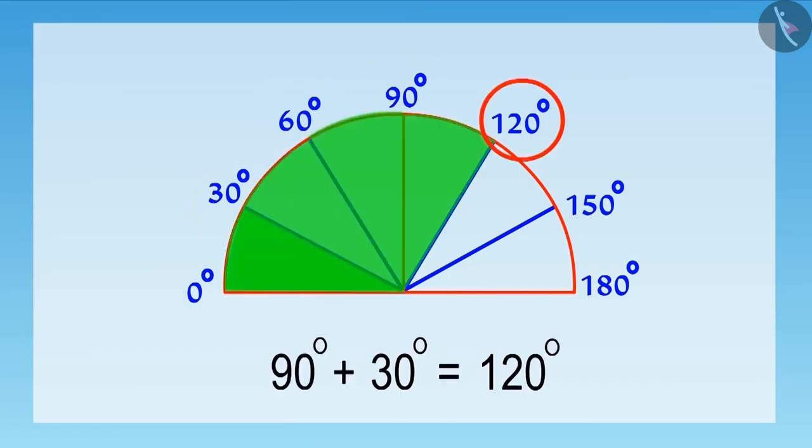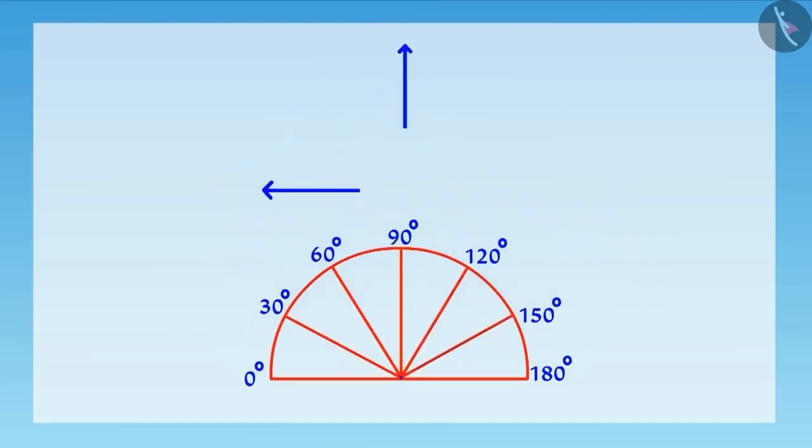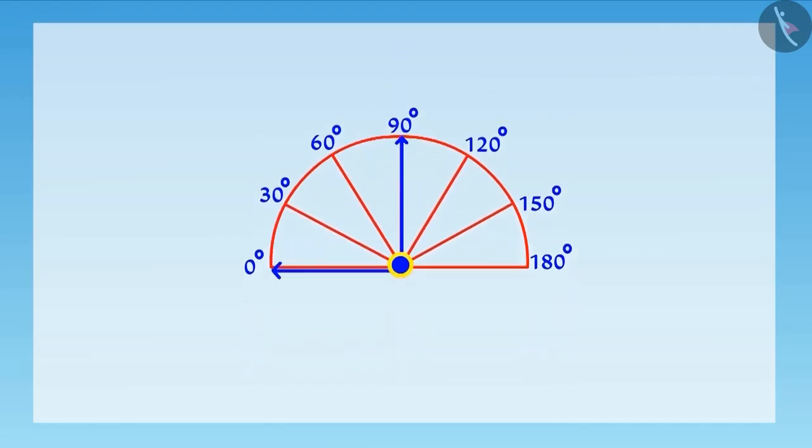Similarly, on adding 30 degrees to each of these angles, the last angle will be 180 degrees. Here, our protractor is ready. Now, if we have to measure an angle, we will place the centre point of this protractor at the vertex of the angle.